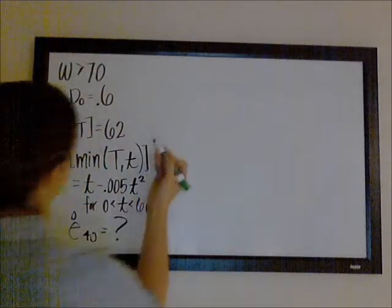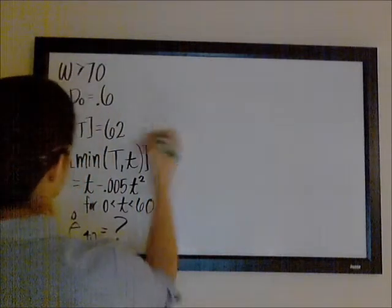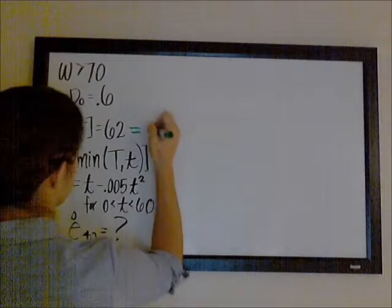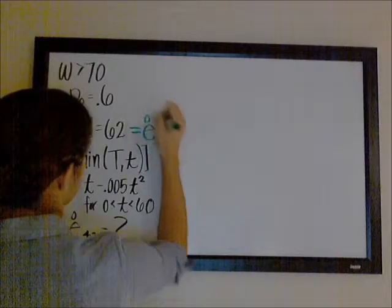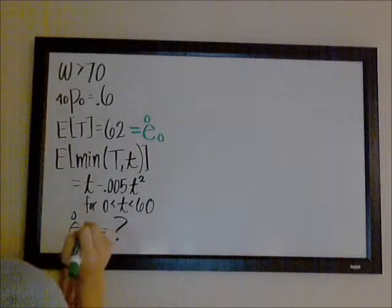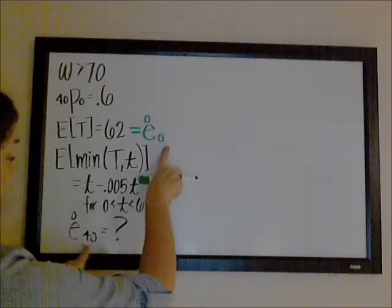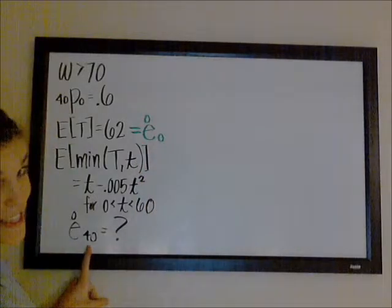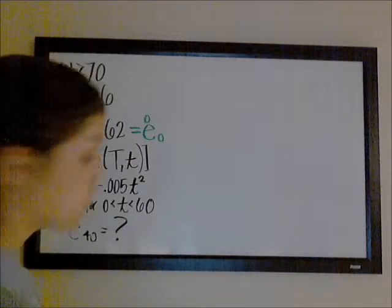First of all, this is the complete expectation of life for 0. Seeing that, and knowing that we need to find this complete expectation of life 40 years later, e-circle-40, and knowing we're in the recursive chapter of my manual, I could see that I would...